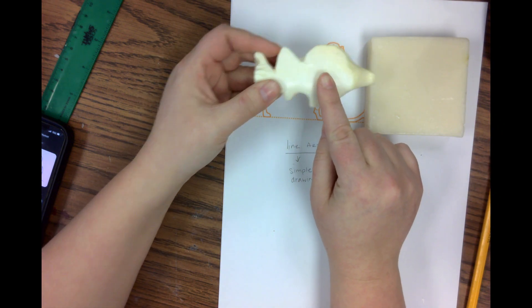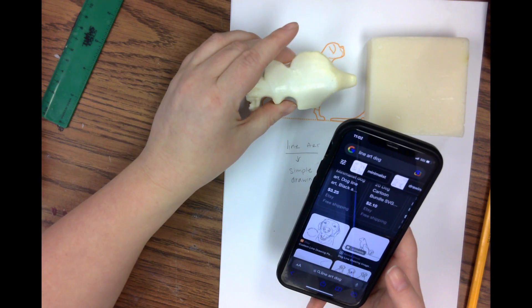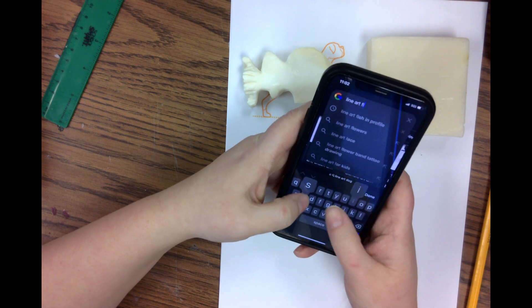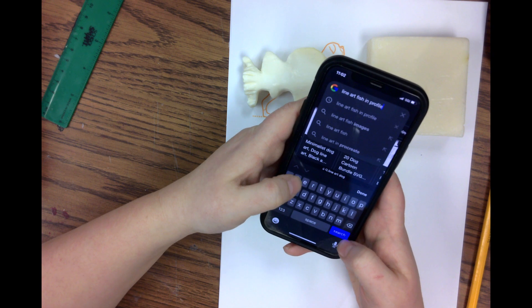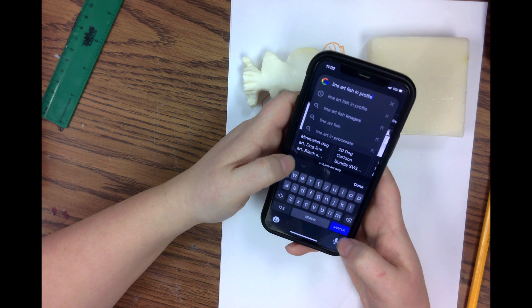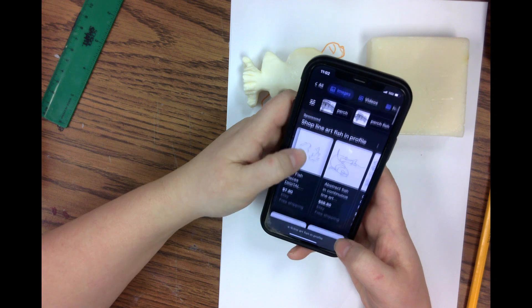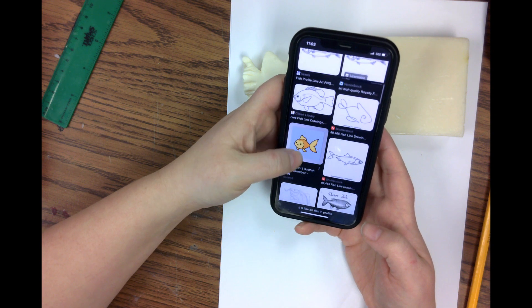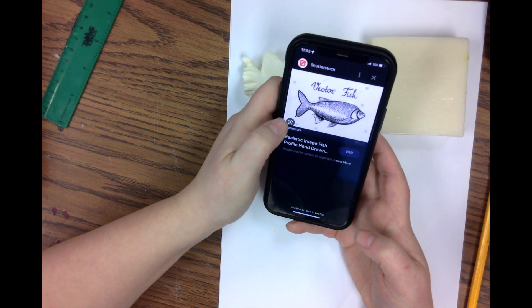So if I was making something like this, I would say line art fish in profile. And that's just like the exact correct English word for from the side, okay? So now it's going to show me fish in profile. Now this is not a good one because his face is turned. We don't want the face turned. It needs to be super from the side, like that one. That would be a good one, right?